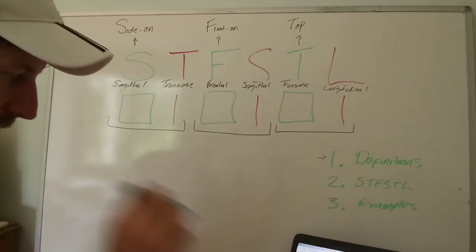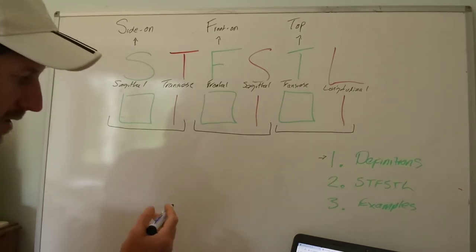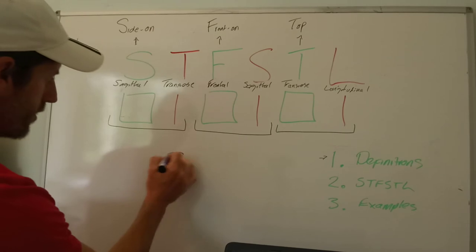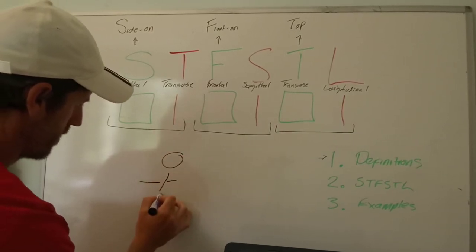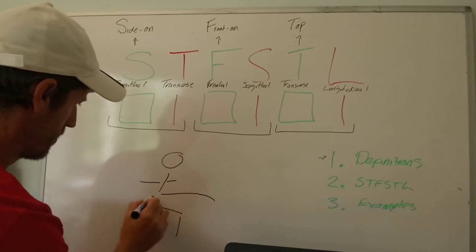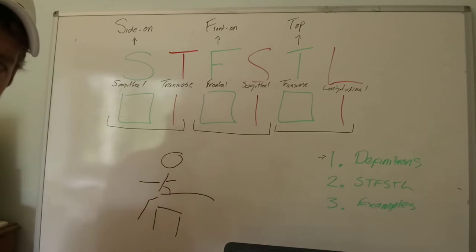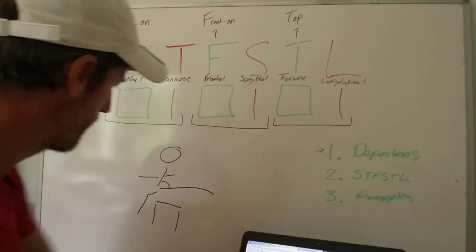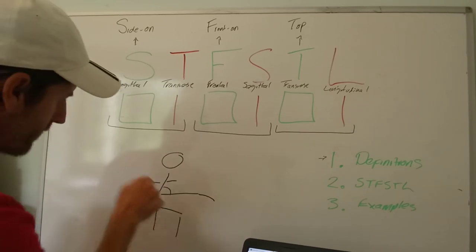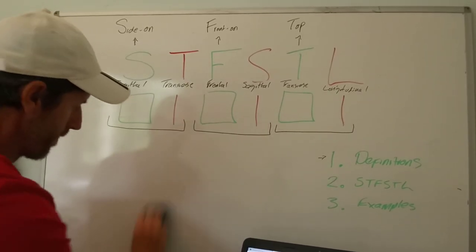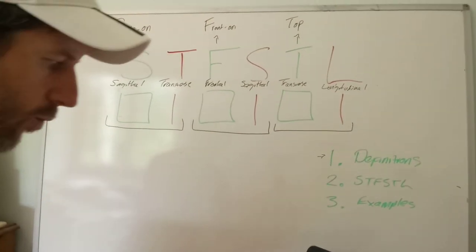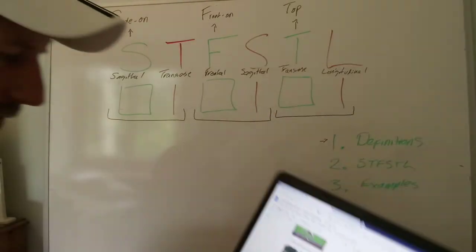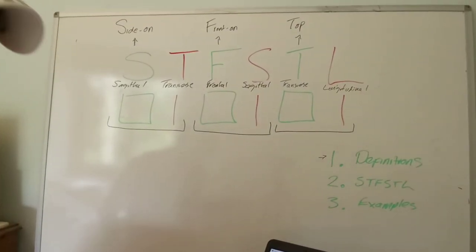It doesn't occur around the frontal axis — it's the transverse axis. So looking at the hurdler getting their leg over that hurdle, you're seeing hip flexion. The plane we're looking at is frontal because it's taken from the front, but the movement is occurring around the transverse axis. Best way to remember it: think about what movement you're looking at. A hurdler has hip flexion — flexion of the hip occurs around the transverse axis.